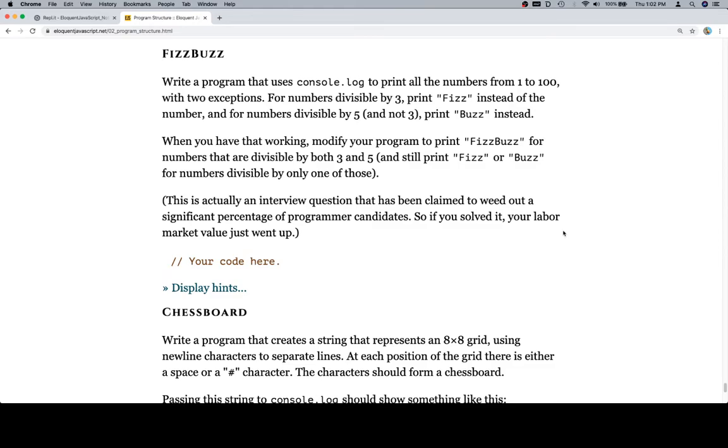When you have that working, modify your program to print FizzBuzz for numbers that are divisible by both 3 and 5, and still print Fizz or Buzz for numbers divisible by only one of those. This is actually an interview question that has been claimed to weed out a significant percentage of programmer candidates. So if you solved it, your labor market value just went up.